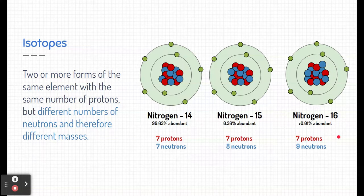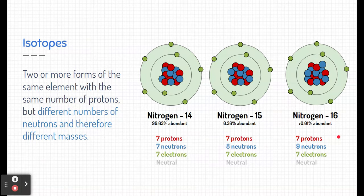So those are three isotopes of nitrogen, same element, just different numbers of neutrons, and therefore different masses. The number of electrons are the same for all of these. We're assuming that these elements are neutral, which they are.